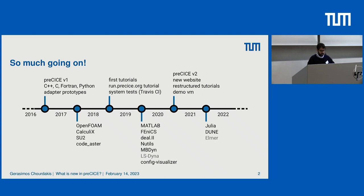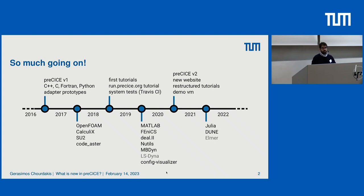We also had a first approach to testing everything with Travis CI, which unfortunately got phased out. We are working on better alternatives. Then we had many new codes and bindings — language bindings for MATLAB, examples in Phoenix, DL2, and Nutils, which are all finite element frameworks. People also worked on MB Dyna and LS Dyna, and there was the config visualizer we used yesterday.